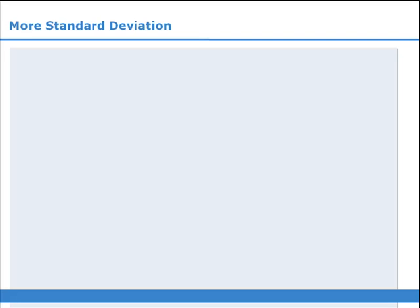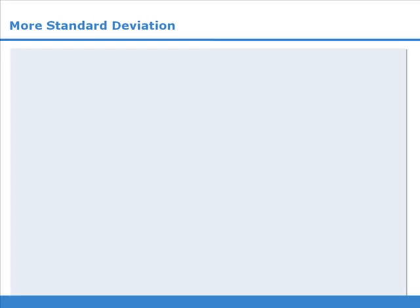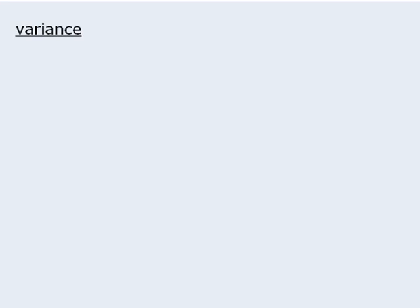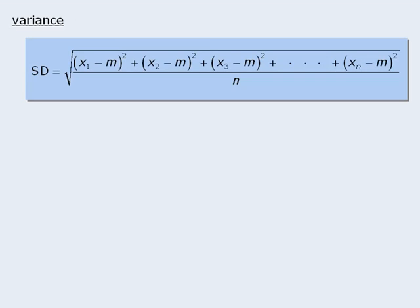In this lesson, we will examine two concepts related to standard deviation. The first concept is variance. Variance is closely related to standard deviation. In fact, when we calculate the standard deviation of a set of numbers, the variance of that set is equal to the value inside the square root here.